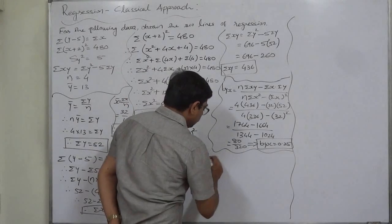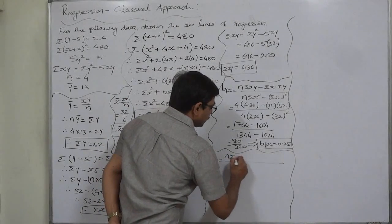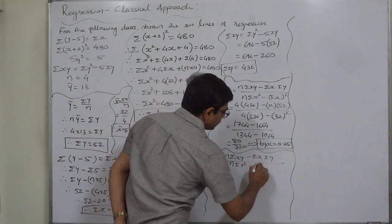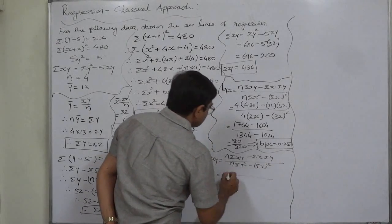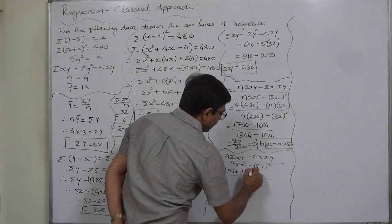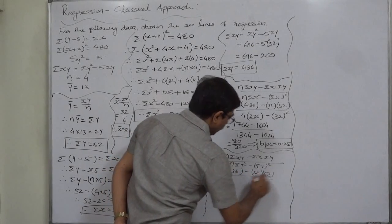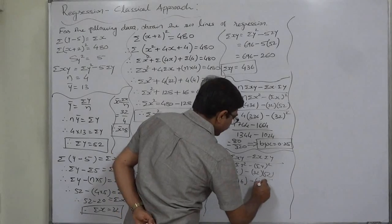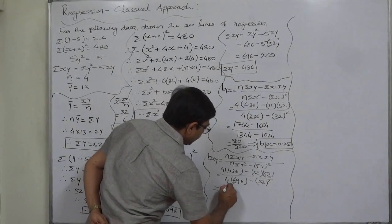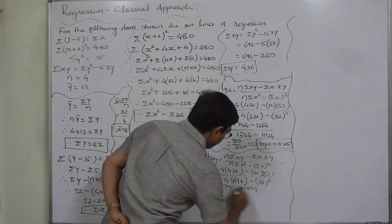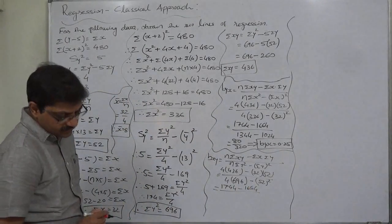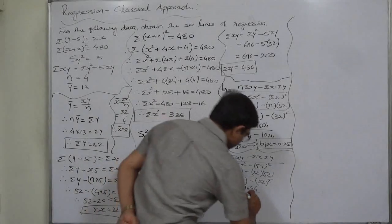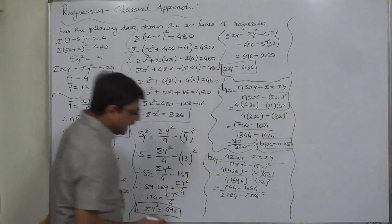Similarly, b_xy = (n·σxy − σx·σy) / (n·σy² − (σy)²). The numerator is the same: 4×436 − 32×52 = 80. The denominator: 4×696 − 52² = 2784 − 2704 = 80. So b_xy = 80/80 = 1.